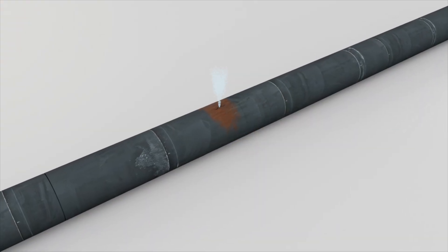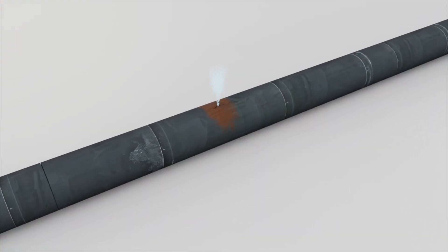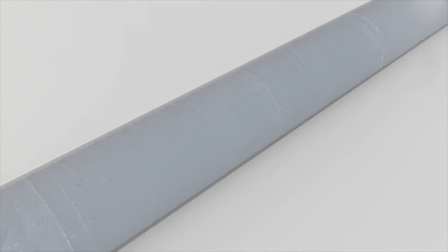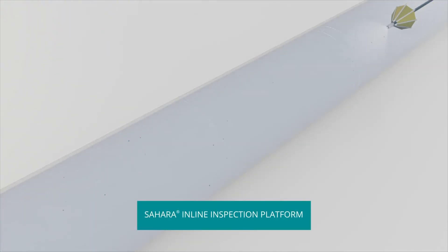Utilities can prevent pipeline failures and save water by identifying and addressing leaks on critical mains. Xylem's Sahara platform is a tethered inline inspection tool that detects leaks and air pockets.